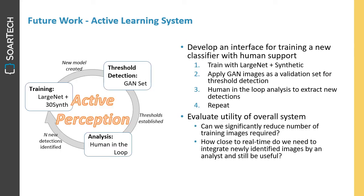In summary, what we've demonstrated are the basic steps for an active learning system. We want to use this information to develop an interface for training a new classifier with human support. Start by training with our large network and adding some synthetic images, which we have demonstrated to be the best way of improving model performance. We can then use our GAN image set for threshold detection — identifying image filtering thresholds and target cueing thresholds. A human in the loop then does analysis to extract new detections, which are fed back in as new training data and the process repeats. In the future, we intend to evaluate whether we can significantly reduce the number of training images required, and how close to real-time we need to integrate newly identified images by an analyst in order to still be useful. Thank you very much.